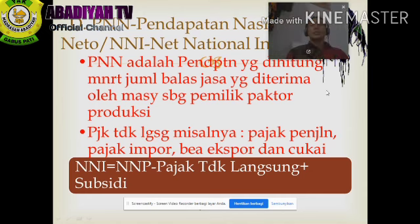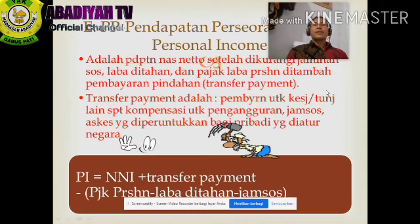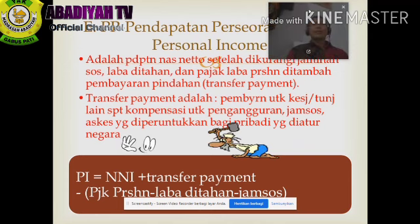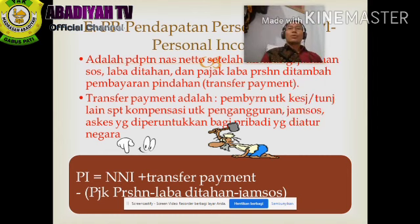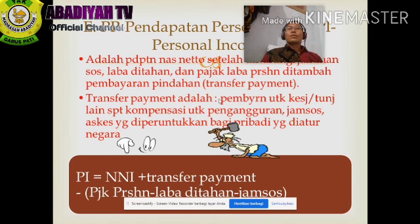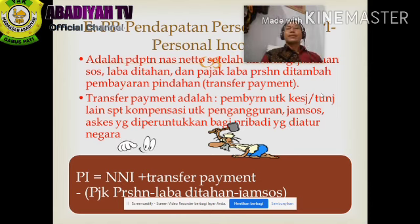Selanjutnya PP atau PI, Pendapatan Perseorangan atau Personal Income. Rumusnya adalah NNI ditambah transfer payment, dikurangi pajak perusahaan, dikurangi laba ditahan, dan dikurangi jaminan sosial. Transfer payment adalah pembayaran untuk kesejahteraan, misalnya kompensasi pengganti pengangguran, jaminan sosial, atau asuransi kesehatan yang diperuntukkan bagi pribadi yang diatur oleh negara.